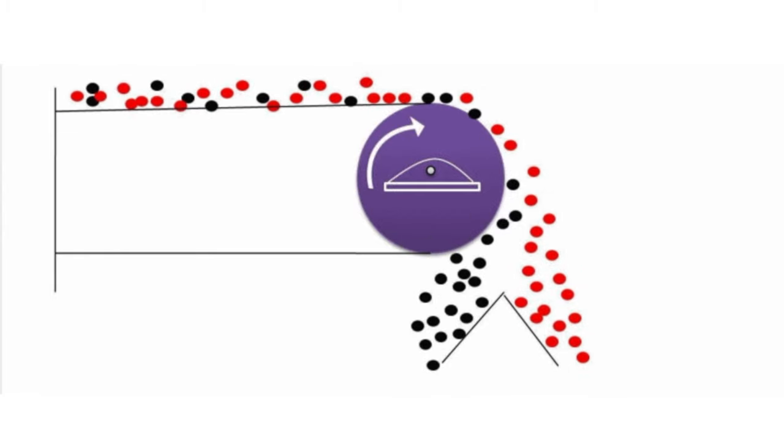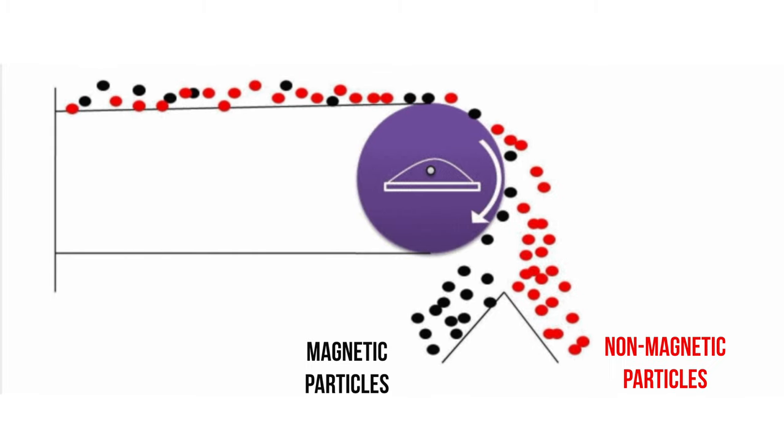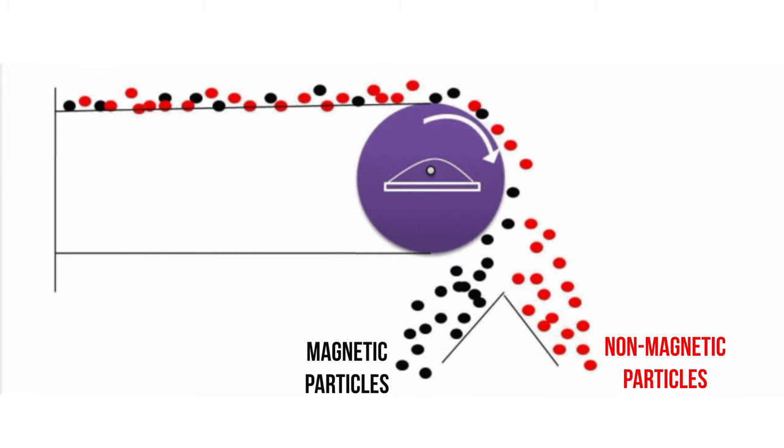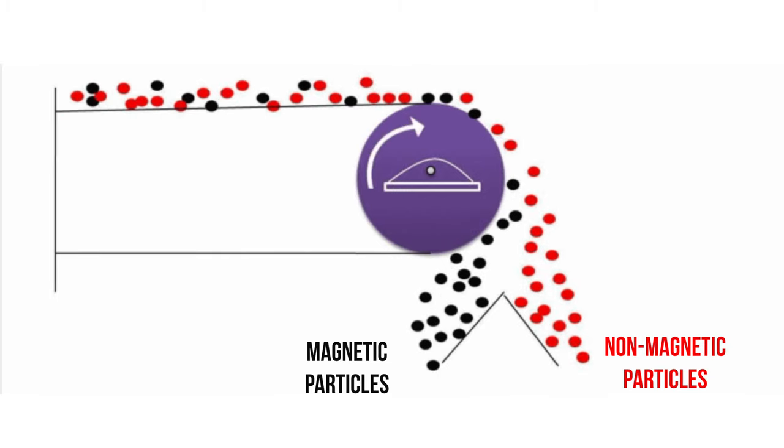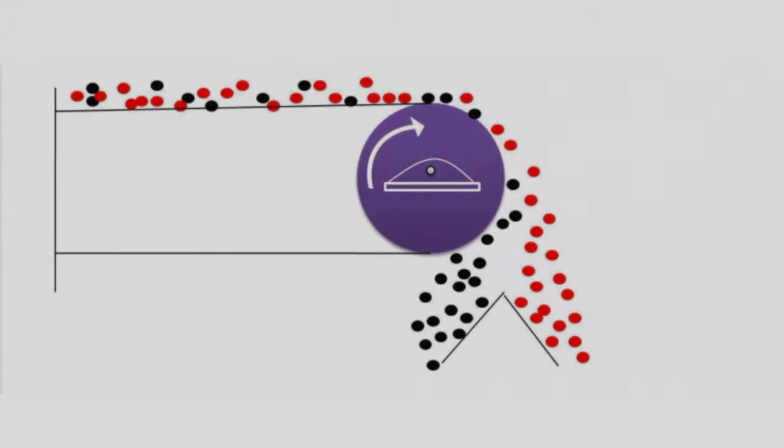The ore grains are fed onto a revolving belt. The roller at the end of the belt is magnetic. This means that all the magnetic grains in the ore will stick to the belt when it goes around the roller, while the non-magnetic grains will fall off the end. As soon as the magnetic grains move past the magnetic roller, they will also fall down.